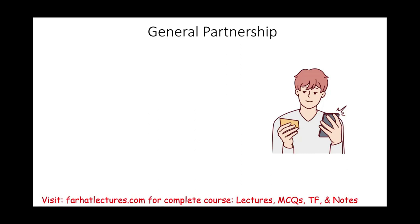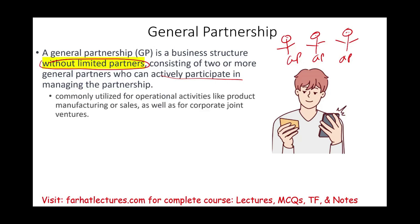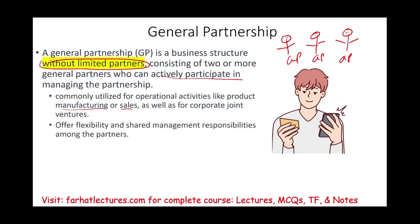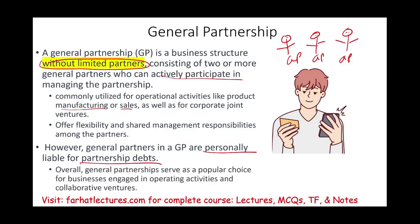Starting with general partnership: in a general partnership you don't have any limited partners. You might have two, three, four, or five individuals and they are all general partners. That means they are all participating in the management of the partnership. Some common uses include operational activities like product manufacturing or sales, corporate joint ventures, and other businesses. It offers flexibility because management is shared among partners, but the risk is that you are personally liable for the partnership debt.